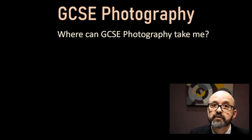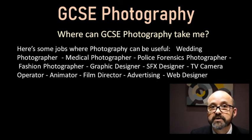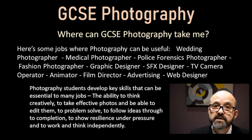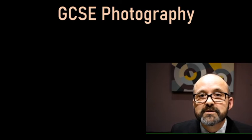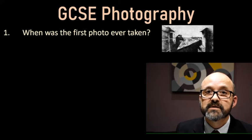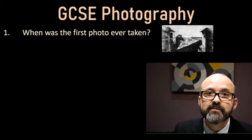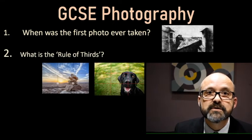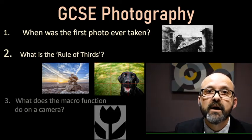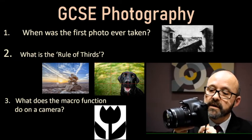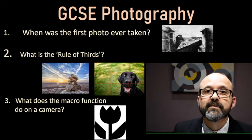GCSE Photography, like Fine Art, is a great way to start your journey to a job in the creative sector. By the end of Year 11 you'll be skilled in Photoshop — one of the key pieces of professional software used in the creative industry worldwide. Answers to the quiz: The first photograph was taken in 1826. The rule of thirds is a technique photographers use to make pictures more pleasing — moving your subject to the side rather than the centre. The macro function (the little flower button on the camera) lets you go super close to a subject without it blurring. Thank you for watching.